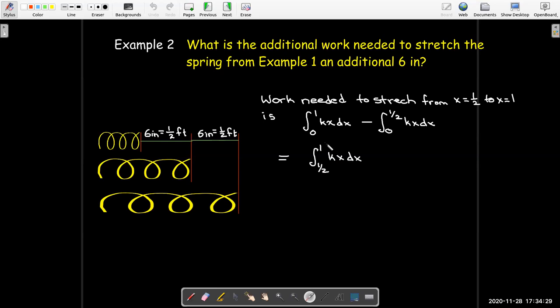So, in our particular example, k is 20, so we can evaluate this integral. First, the antiderivative is 10x squared, and then just evaluate it by substituting x equals 1, then subtract off x equals 1 half. Then we square that, we get 1 minus 1 quarter, and we get 7.5 foot-pounds.